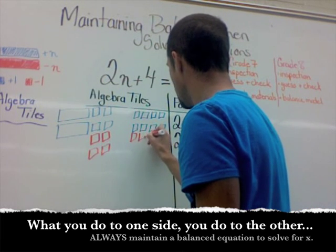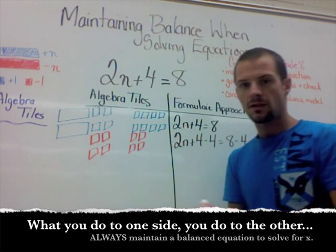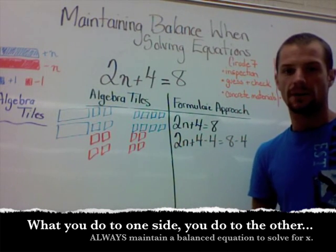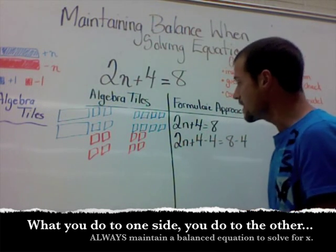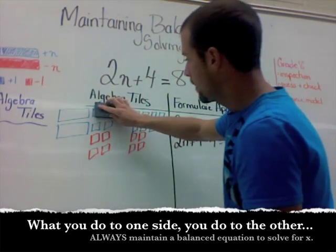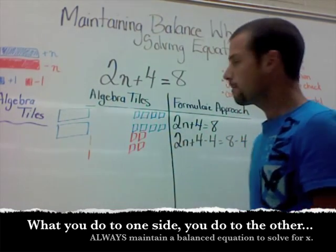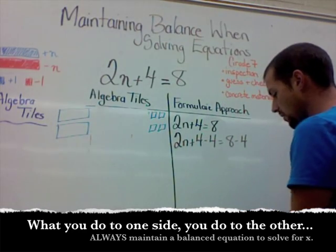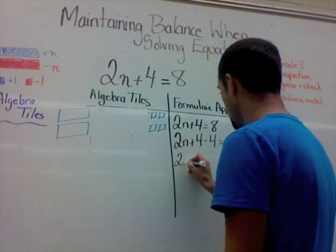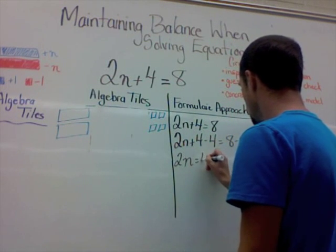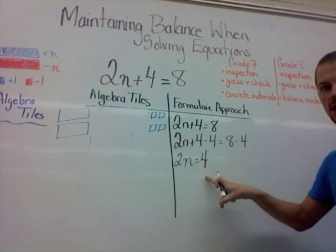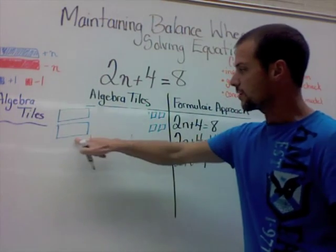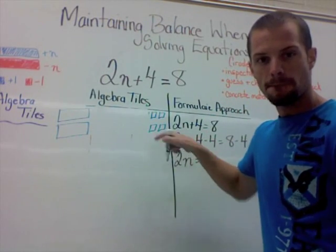Because we brought in 4 negatives on this side, we have to bring in 4 negatives on the other side of the equation. What we've effectively done now is we have taken these 4 away and we've taken these 4 away. So what you're left with on the model here is 2n equaling 4. And that's what's here: 2n and 4.